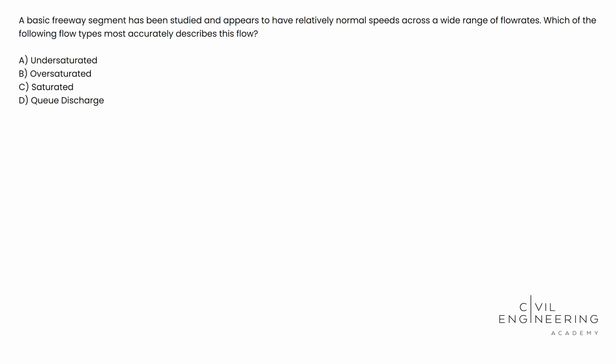So today we have a traffic engineering problem. We're going to be talking a little bit about some uninterrupted flow. Here's what the question says. A basic freeway segment has been studied and appears to have relatively normal speeds across a wide range of flow rates.